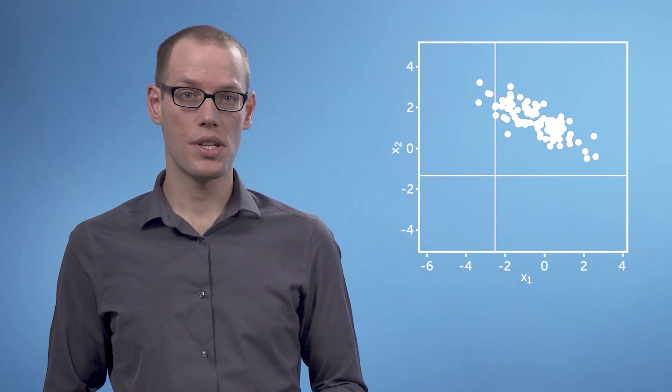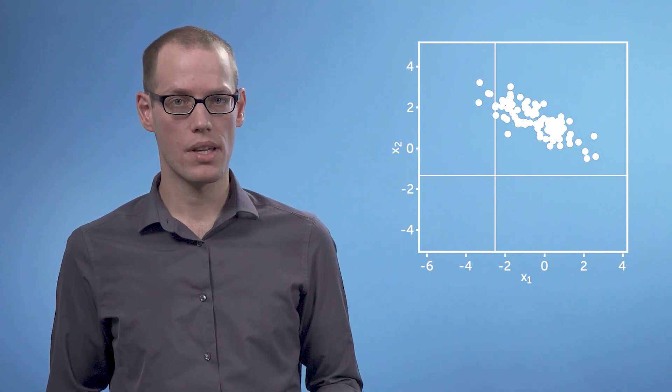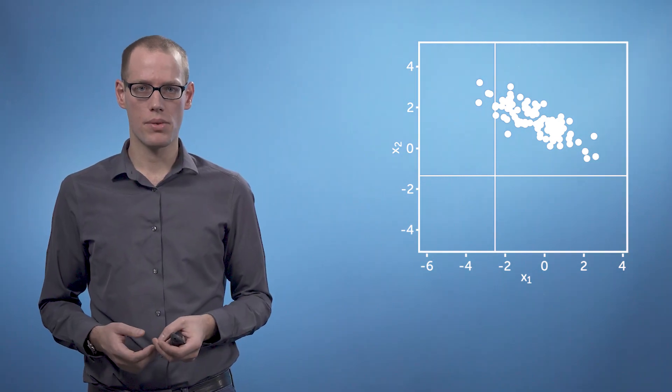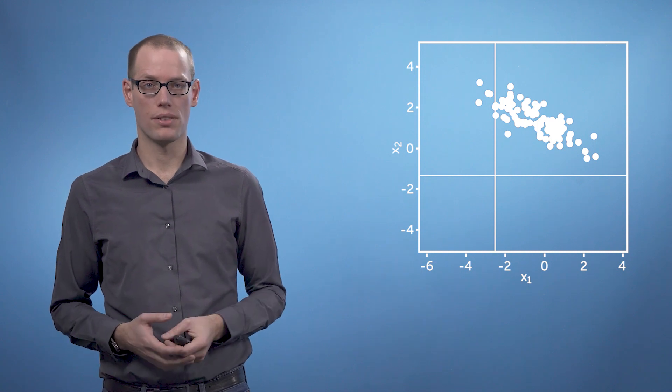In the following videos, we will be looking at exactly these kinds of statistical properties and discuss mean values to describe average data points, variances that make statements about the spread, and covariances which characterize orientation and correlations.